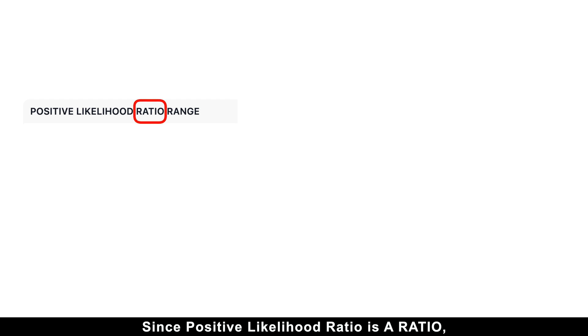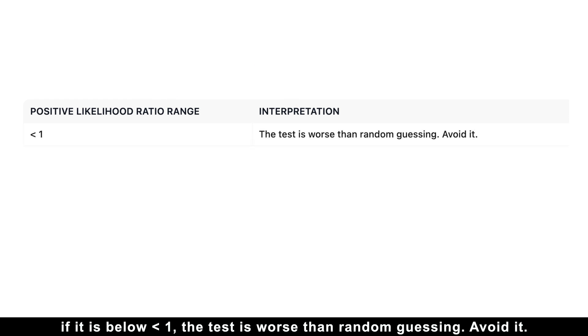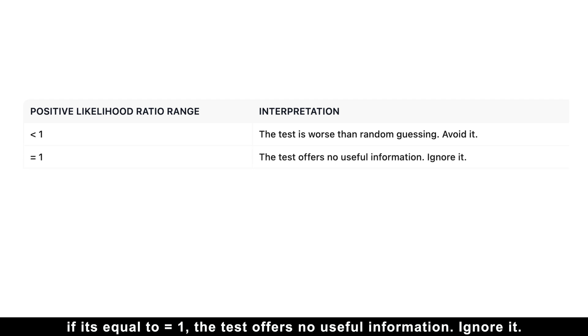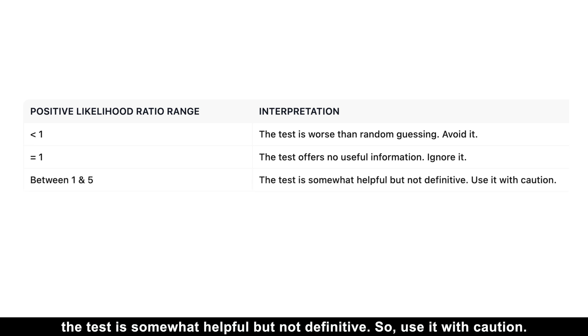Since the positive likelihood ratio is a ratio, the interpretation is similar to any ratio. If it is below 1, the test is worse than random guessing — avoid it. If it is equal to 1, the test offers no useful information — ignore it. When the positive likelihood ratio is between 1 and 5, the test is somewhat helpful but not definitive, so use it with caution.